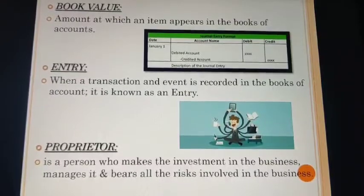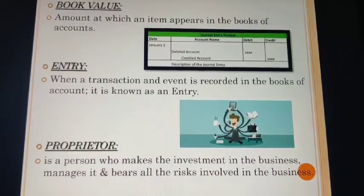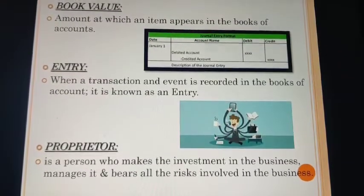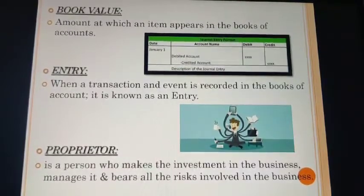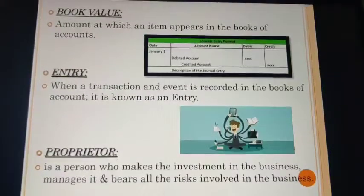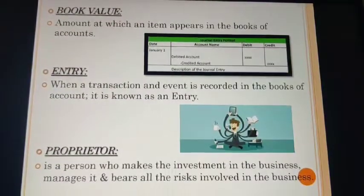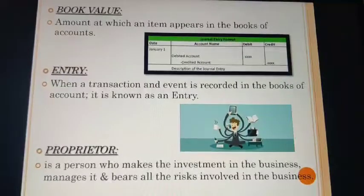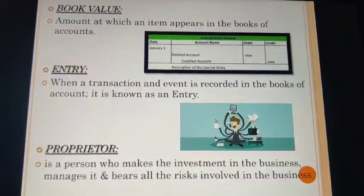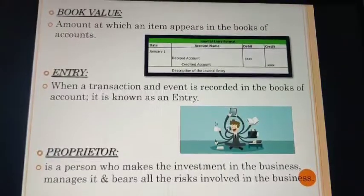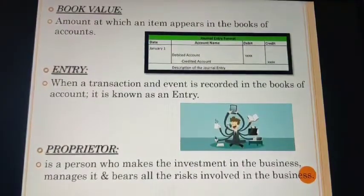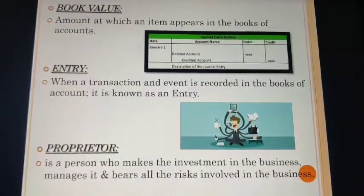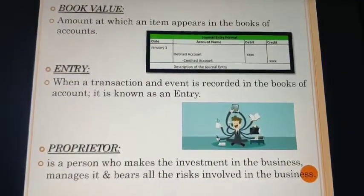Next is proprietor. A proprietor is a person who makes the investment in the business, manages it, and bears all the risks involved in the business. As discussed, the basic accounting term capital denotes the amount invested by the owner of the business. Now that owner is the proprietor. In accountancy and commerce we use this terminology as proprietor.